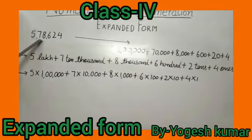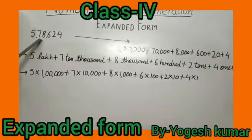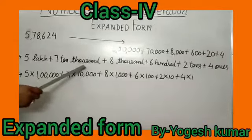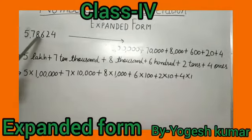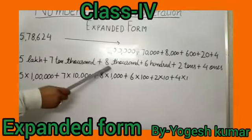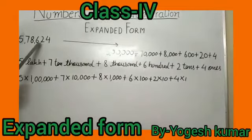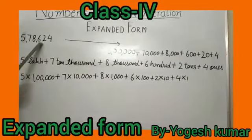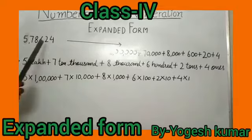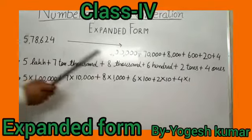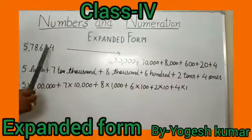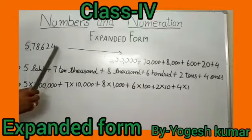Then we will write lakh with 5. Similarly, 7 lies on ten thousand place — it becomes 7 ten thousand. 8 lies on thousand place — 8,000. 6 lies on hundred place — 6 hundred. 2 lies on tens place — 2 tens.